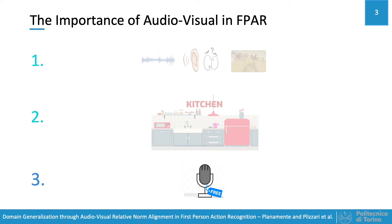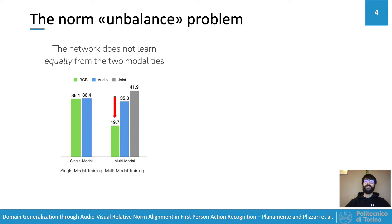Even if the audio-visual inputs are rich in information, it is not guaranteed that using them in a multimodal fashion achieves optimal performance. We notice that the network does not learn equally from the two modalities.